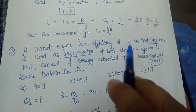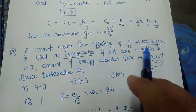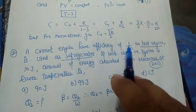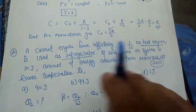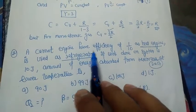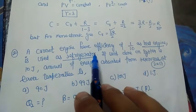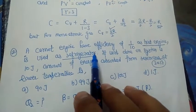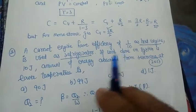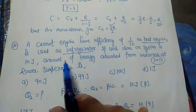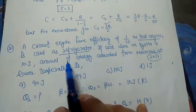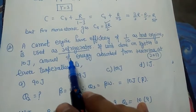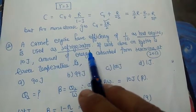The next question was in the NEET 2017 exam. A Carnot engine has efficiency of 1/10. This heat engine is used as a refrigerator. We have to calculate the coefficient of performance (β). If the work done on the system is 10 joules, we need to find the amount of energy absorbed from the reservoir at lower temperature, i.e., Q₂.